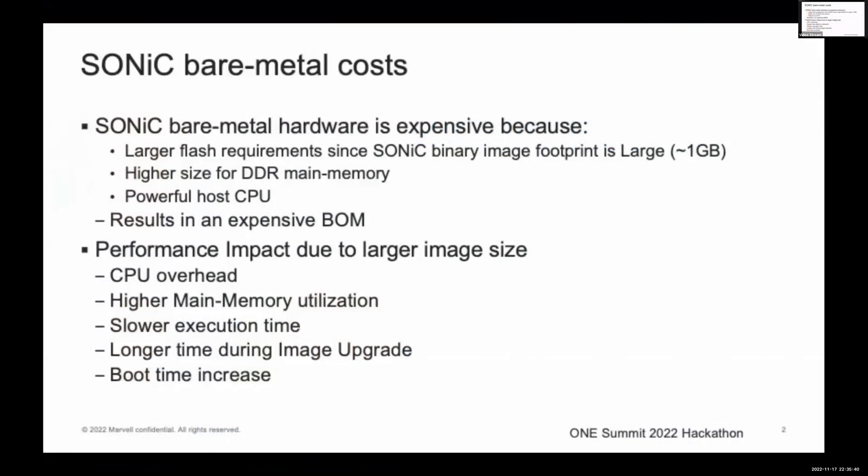Today, SONiC bare-metal hardware is expensive because of several reasons. It needs a large flash since the SONiC binary image footprint is large. For our platform, the image footprint is around 1GB. Further, we need a higher size DDR main memory because SONiC uses a large root file system. Also, we need a powerful host CPU since SONiC is not optimized for specific CPU platforms. All these result in an expensive bill of materials.